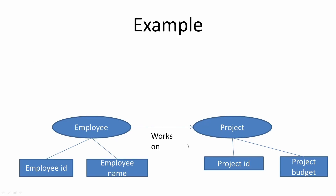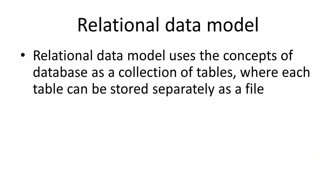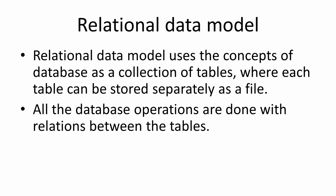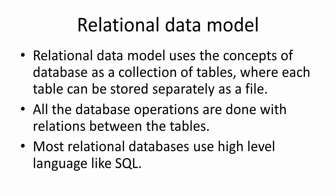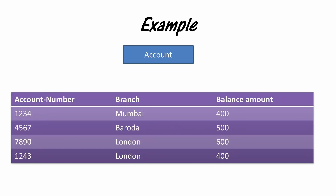Now let's look at the relational data model. The relational data model uses the concept of a database as a collection of tables. Each table is stored separately as a file, and all database operations are done using relations between the tables. Most relational databases use a high level language like SQL. Let's look at an example — say we have a table called account with three columns.